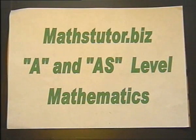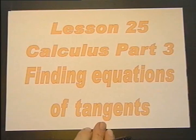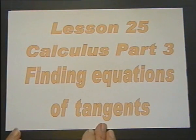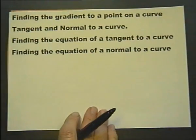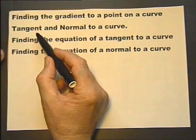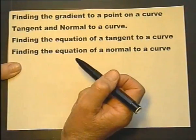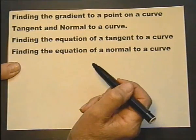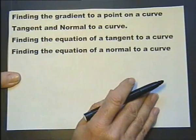A and AS level mathematics. Lesson 25, Calculus part 3: Finding the equation of tangents. We're going to revise finding the gradient to a point on a curve. We're going to talk about tangents and normals to a curve, finding equations of tangents to a curve, and finding equations of normals to a curve.